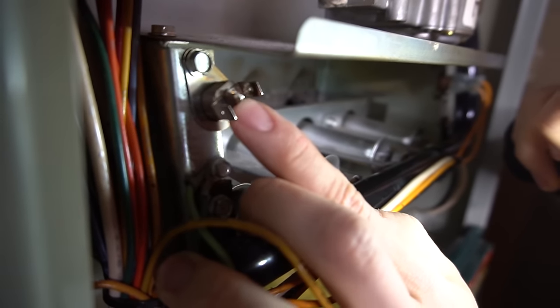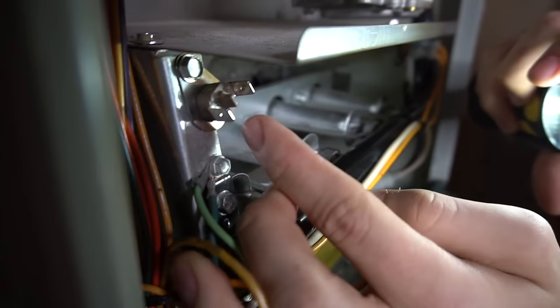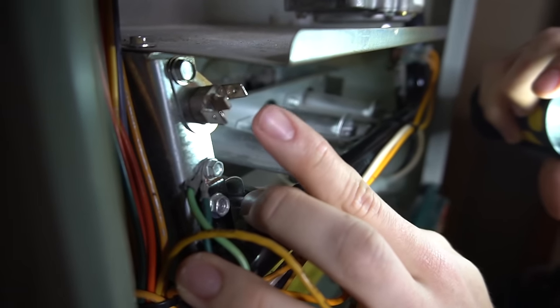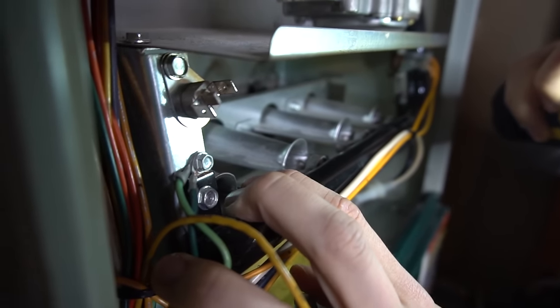This means that if they ever trip, you have to manually reset them. That's why there's a little button right on top of them. If your flame rollout switch is tripped, this button will be popped out. If you press it in, that will reset it and your furnace will come back on.